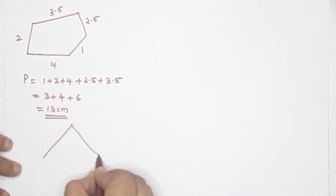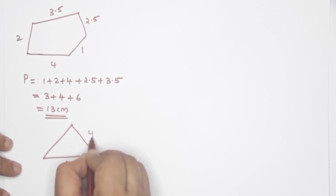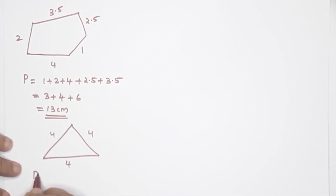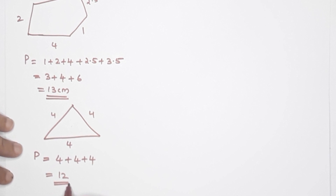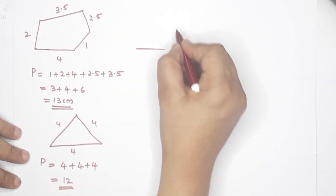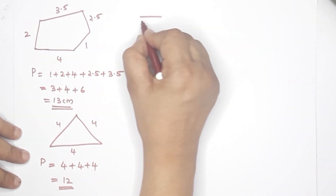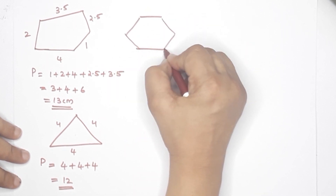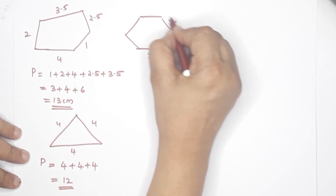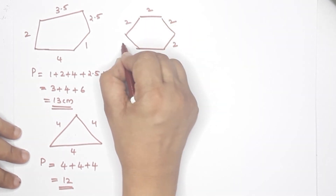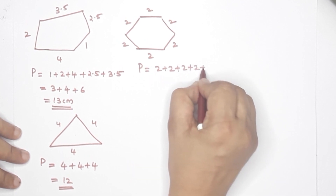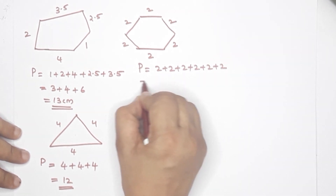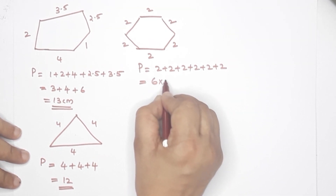What do you call a triangle? This is 4 cm, this is 4 cm, this is 4 cm — this is 4 cm. 4 plus 4 plus 4: perimeter is 3 times 4 equals 12. This is the perimeter. This is a hexagon — a regular hexagon. All sides are equal: 2, 2, 2, 2, 2, 2.